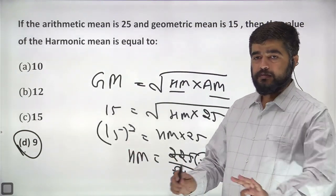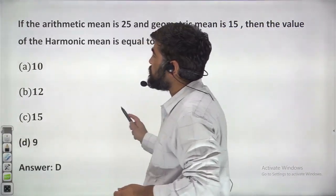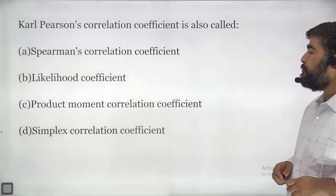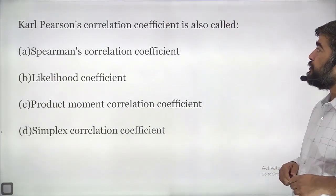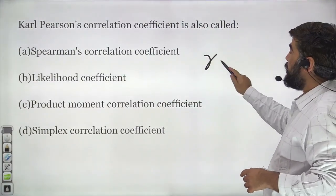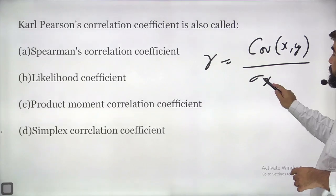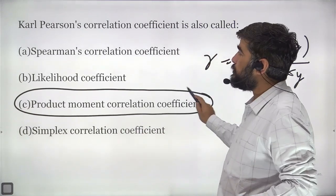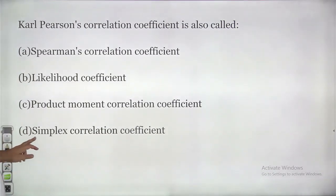You have to answer these questions before seeing the answer — solve them and comment in the comment section. Answer is D. Next: Karl Pearson correlation coefficient is also called product moment correlation coefficient. The formula is R equals covariance of x,y divided by standard deviation of x times standard deviation of y. This is also called product moment correlation coefficient. Answer will be C.